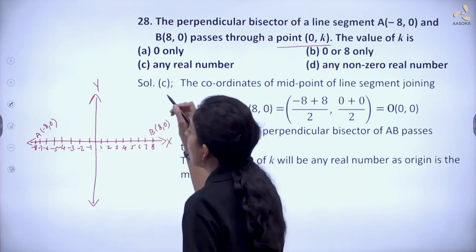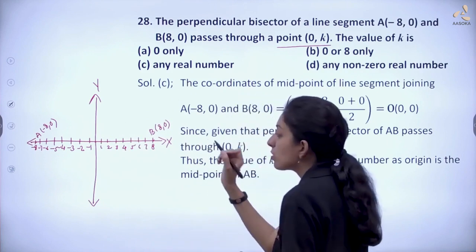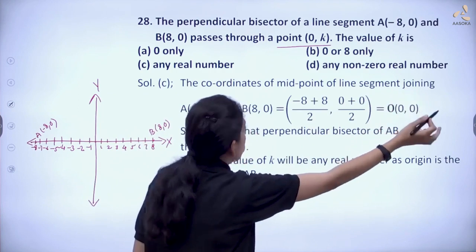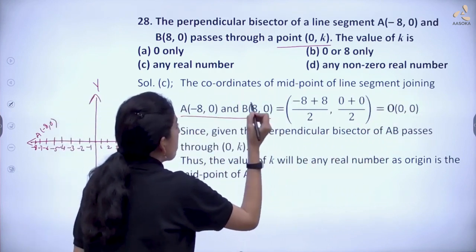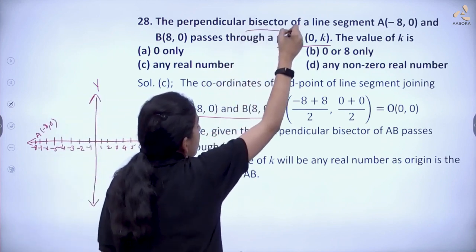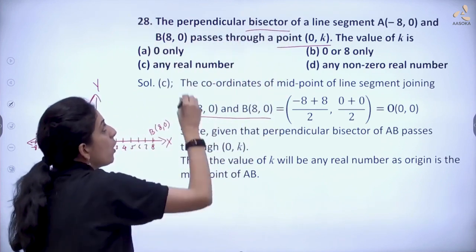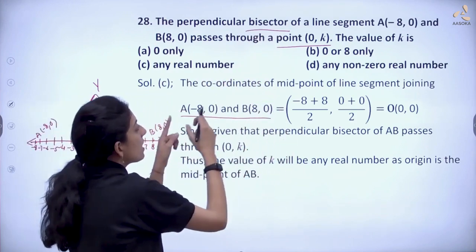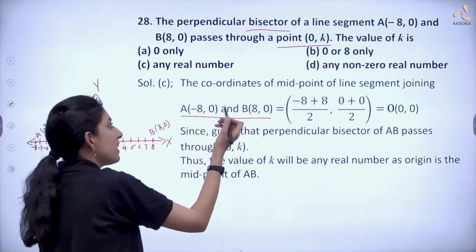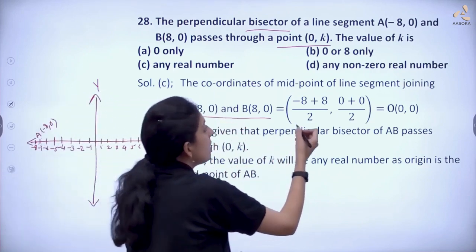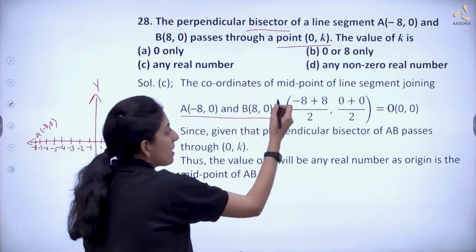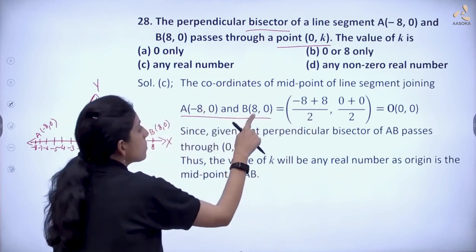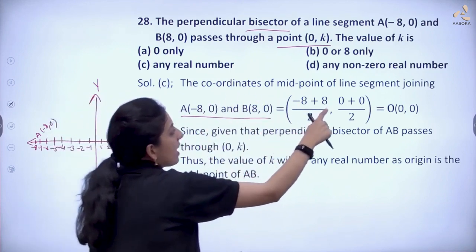So if we have to find the perpendicular bisector, we have to first find which point it bisects. To find that, we will find the coordinates of the midpoint of the line segment joining these two points, because this is the bisector—a line which is perpendicular and also bisects this line segment which is formed by these two points.